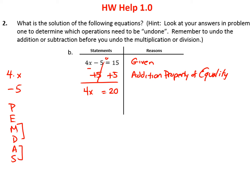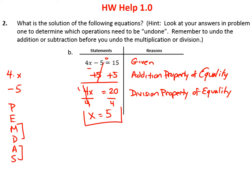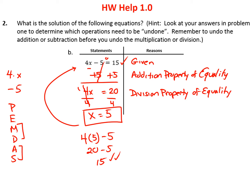The addition property of equality says that if two expressions are equal and you add the same thing to both sides, it's still equal. Negative 5 plus 5 is 0, so I'm left with 4x on this side, and 15 plus 5 is 20 on the other. Next, undo the multiplication: the opposite of multiplying by 4 is dividing by 4 — the division property of equality. 4 divided by 4 is 1, leaving x, and 20 divided by 4 is 5. So x equals 5. Let's check: 4 times 5 minus 5 = 20 minus 5 = 15. Correct.